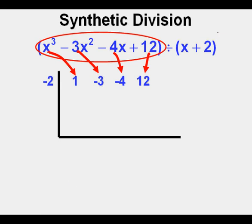The next thing we do is bring down the leading coefficient of x cubed straight down to the x squared place. Then we take the negative 2 here and multiply it by the 1 at the bottom.